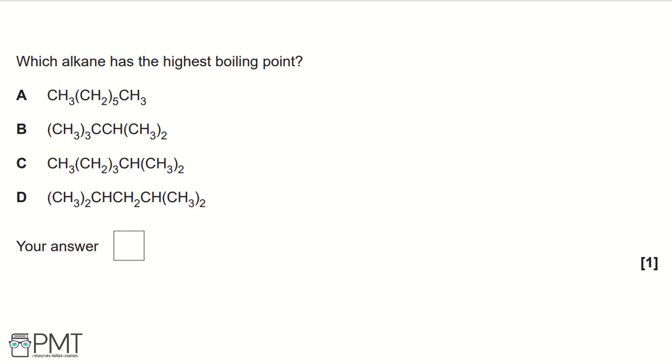Let's start by drawing the formulae for the alkanes we're given in the question. For A, this is heptane, so drawing it skeletally, we would draw 7 carbons or a 7 carbon length chain.